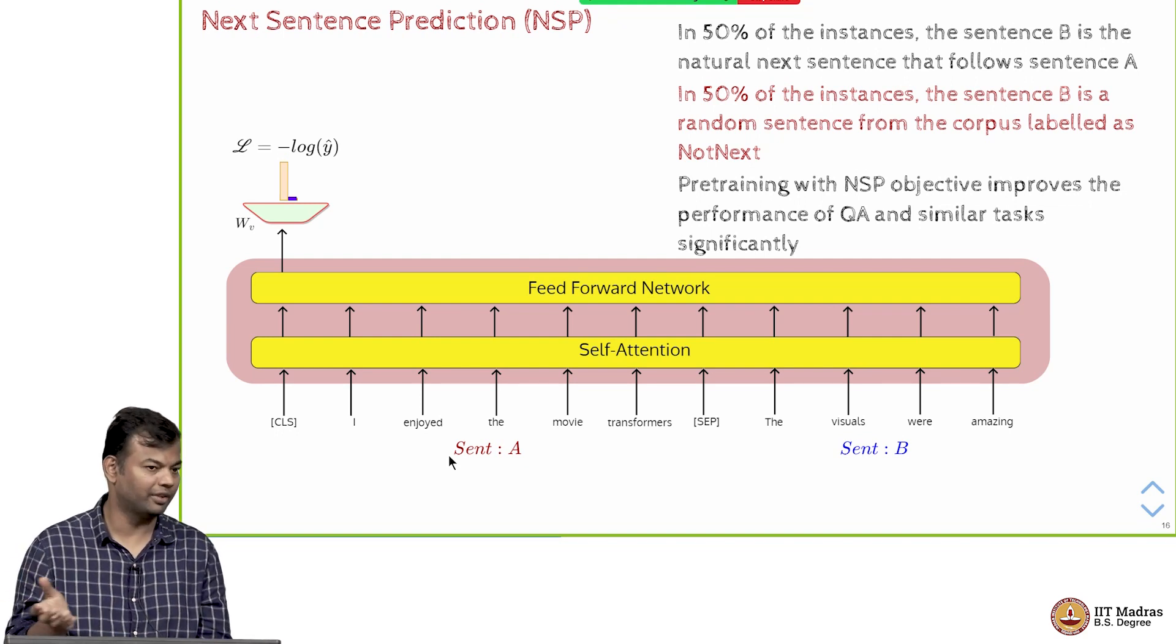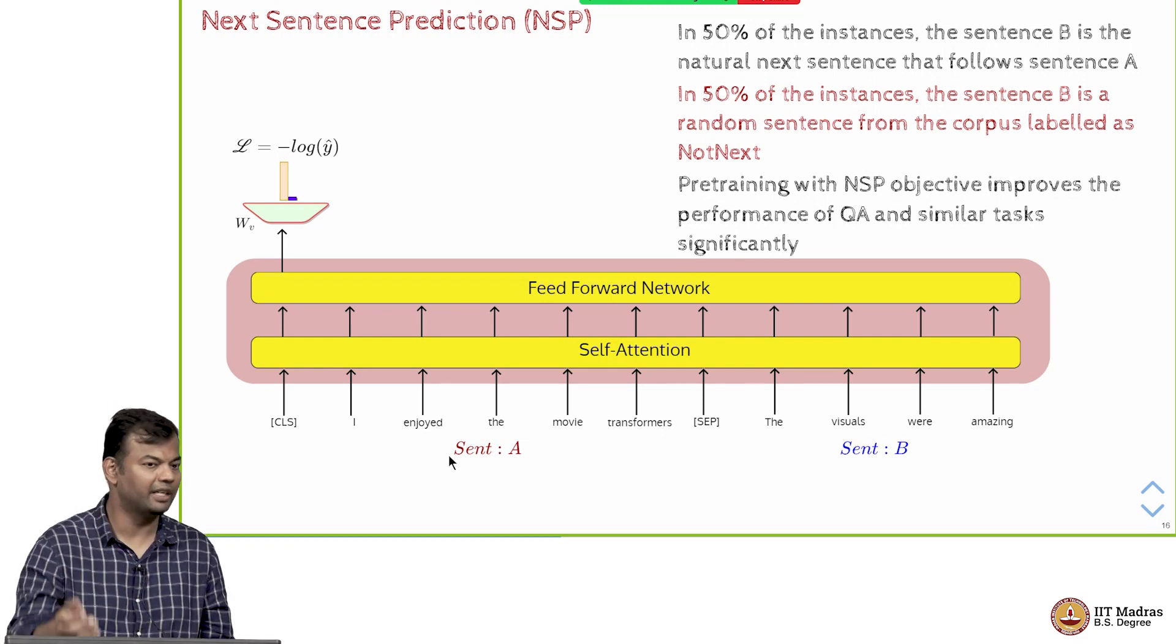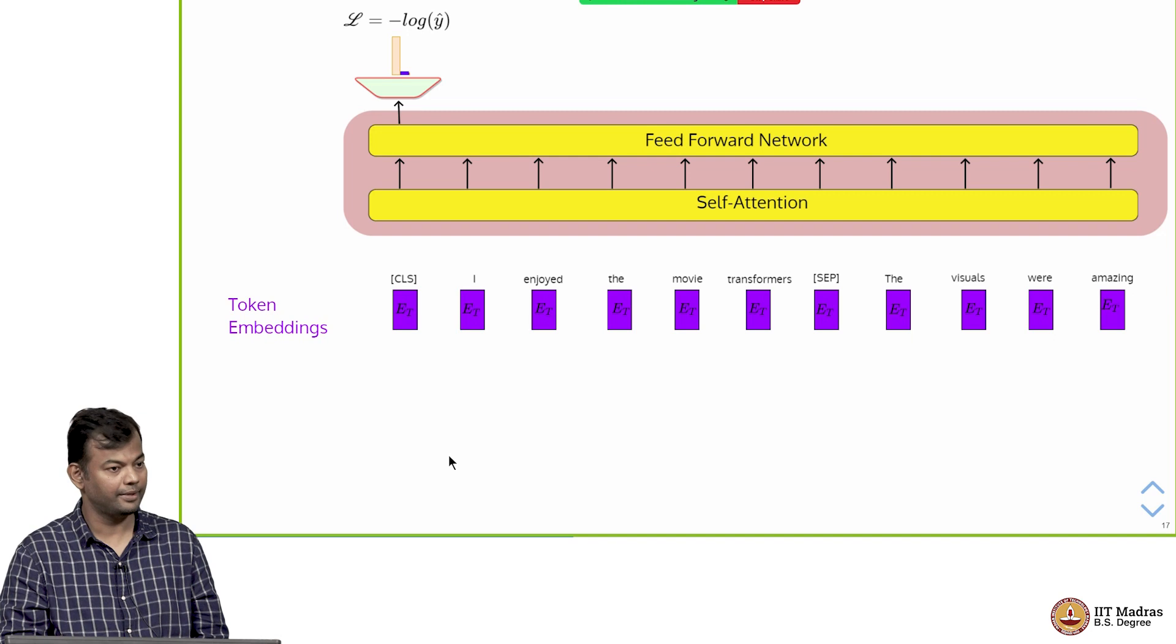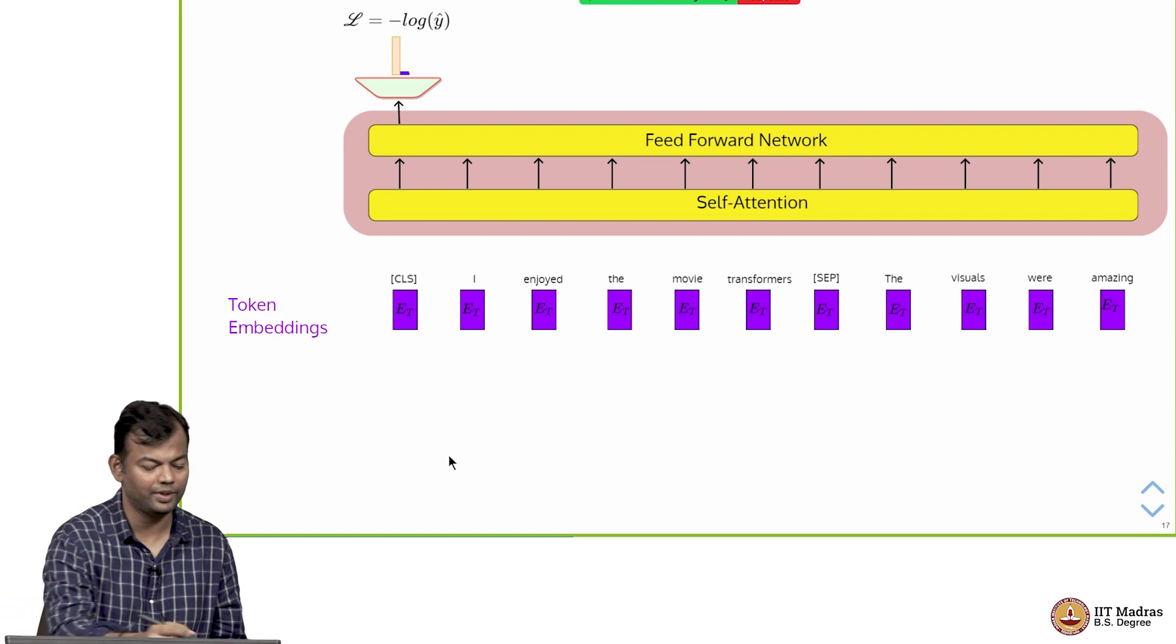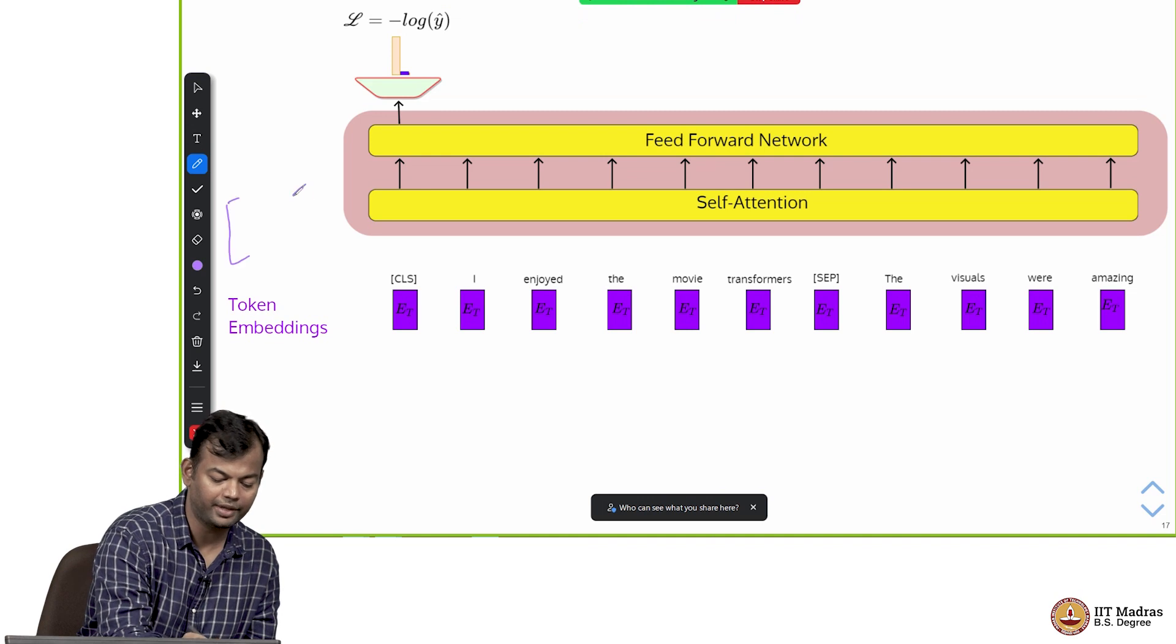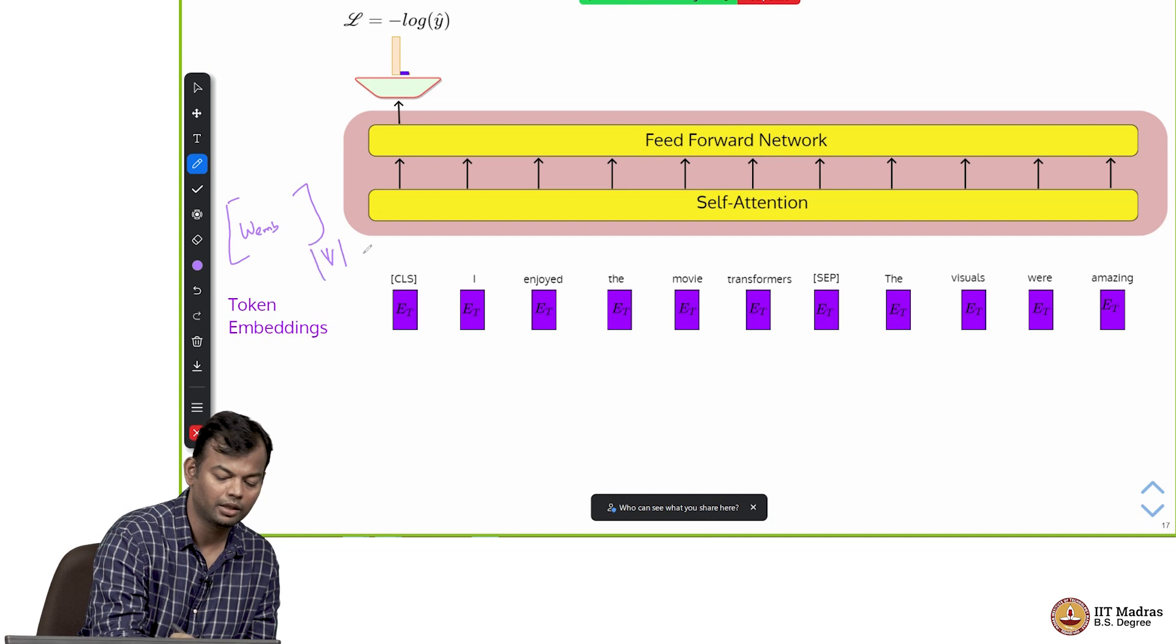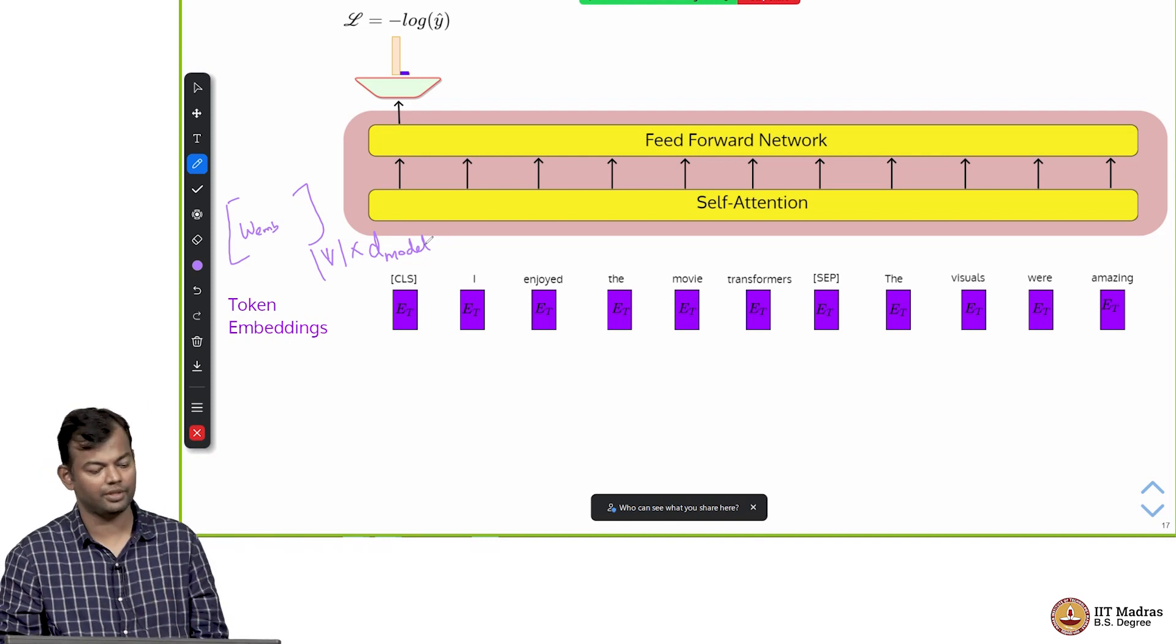This was typically removed after that and only the masked language modeling objective was used in the derivatives of BERT. This is what it looked like. You had the token embeddings, the embeddings for each of these words from the embedding matrix. You have the embedding matrix W embedding which is a vocabulary cross D model size embedding. For every word in the vocabulary it has a D dimensional embedding.